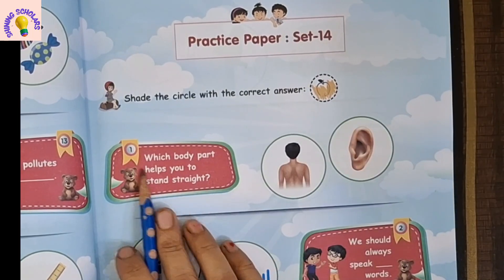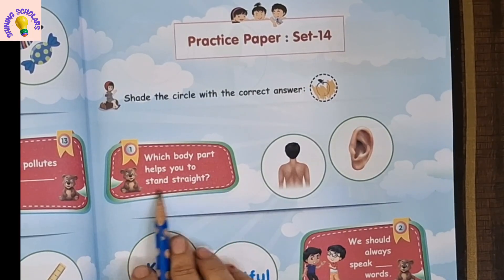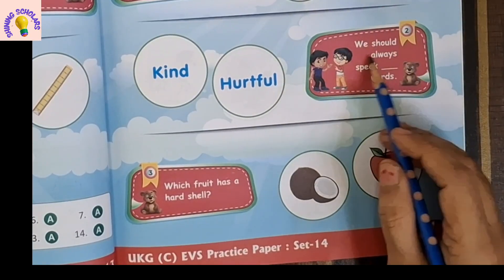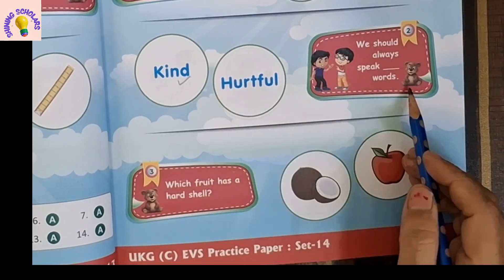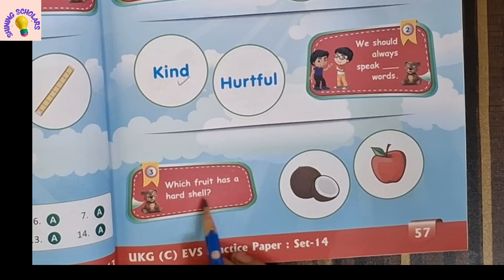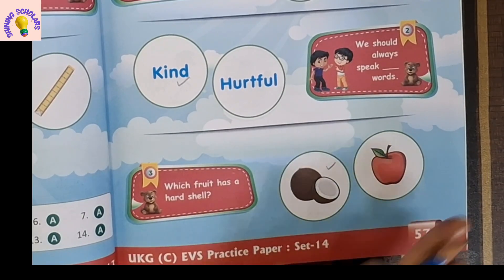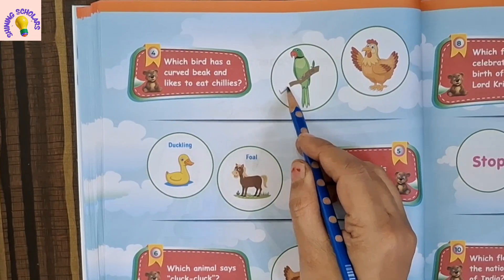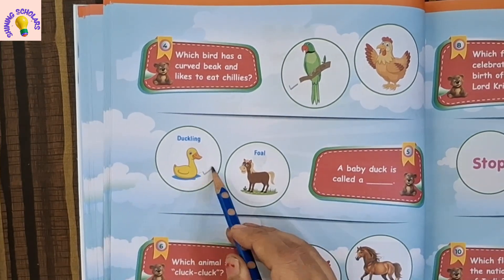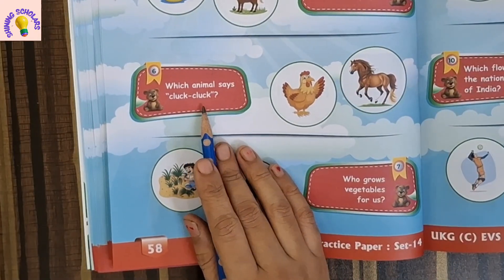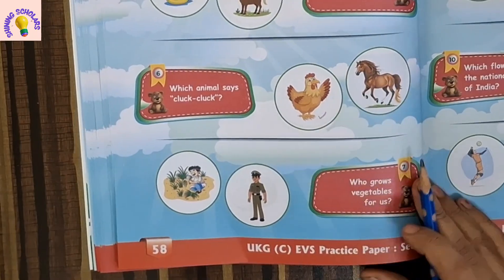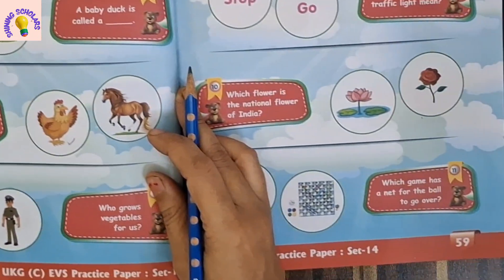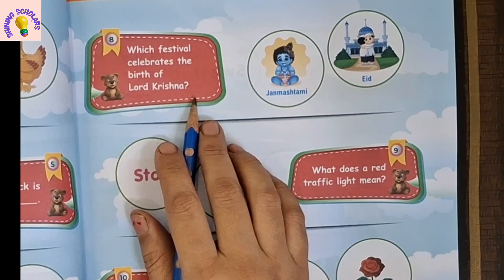Set 14. First question: which body part helps you to stand straight? Your backbone. We should always speak kind words, not hurtful words. Which fruit has a hard shell? Coconut. Which bird has a curved beak and likes to eat chillies? It's parrot. A baby duck is called a duckling. Which animal says cluck cluck? This hen says cluck cluck. Who grows vegetables for us? Farmer grows vegetables for us. Which festival celebrates the birth of Lord Krishna? Janmashtami.